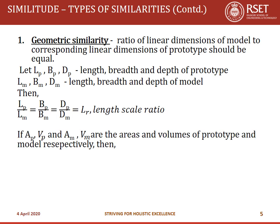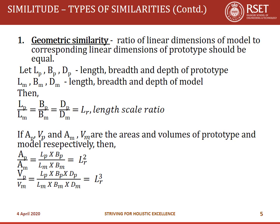If AP and VP are the area and volume of the prototype, and AM and VM are those of the model, then AP/AM equals LP·BP divided by LM·BM, which is LP/LM × BP/BM = LR × LR = LR squared. Similarly, the ratio of volumes would be LR cubed. So if you scale down dimensions equally, areas scale by LR squared.